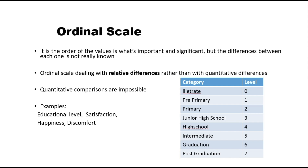Similarly, in this table we have categories of education level. We can simply say that there is a relative difference between the categories — a graduate has more knowledge than someone at intermediate, high school, junior high school, primary, pre-primary, or illiterate level, but obviously less knowledge than a postgraduate student. We cannot quantify the difference in knowledge, but we can order it. That is why this type of education level data is an example of ordinal scale.